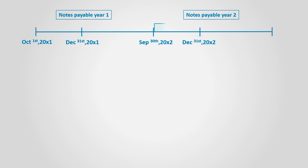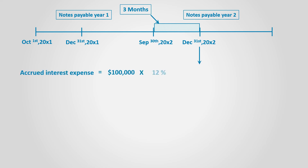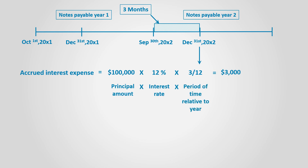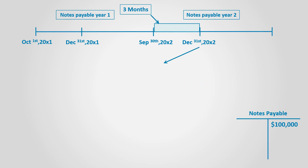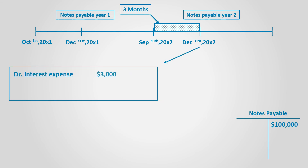At the end of the second year, on December 31st, the business needs to record a new adjusting entry to record the accrued interest for the year. Accrued interest is $3,000 as previously illustrated. The adjusting entry is to debit interest expense by $3,000 and credit interest payable.